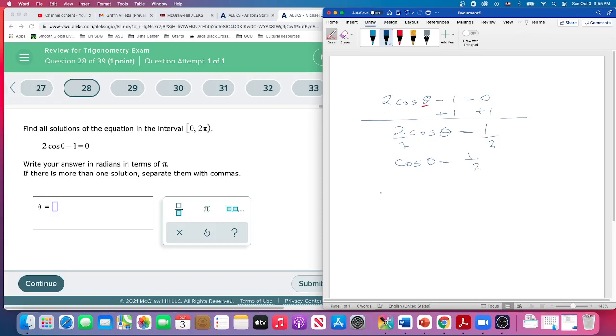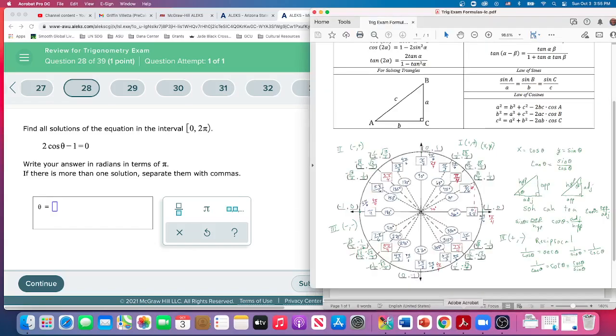Take the inverse cosine, which means that we're looking what angle, what angle of theta gives us a cosine value of 1 half. And that's where having the unit circle is very helpful. Where is cosine 1 half?